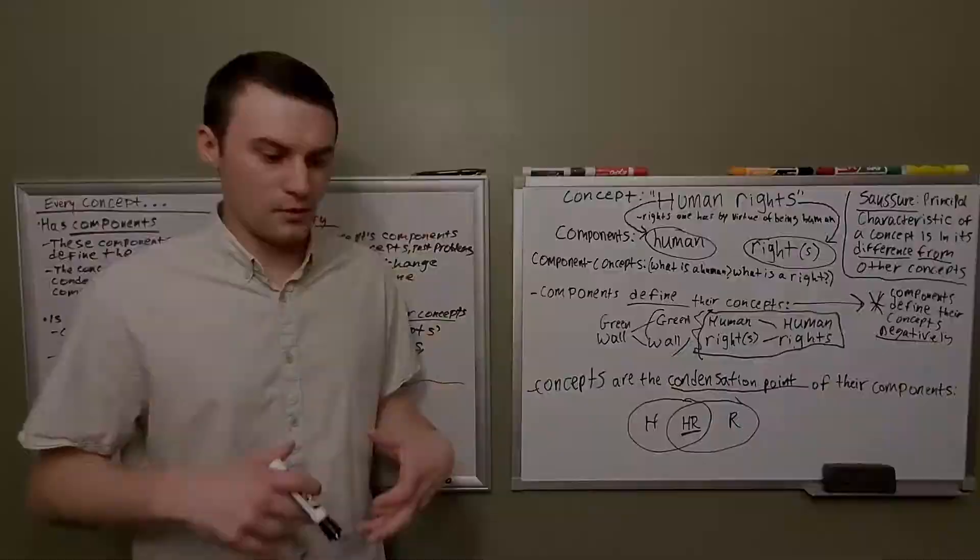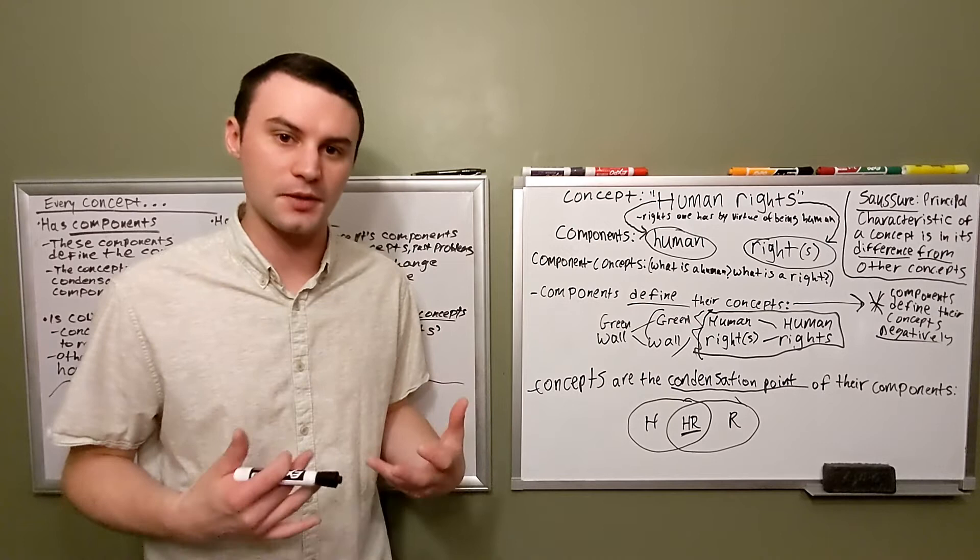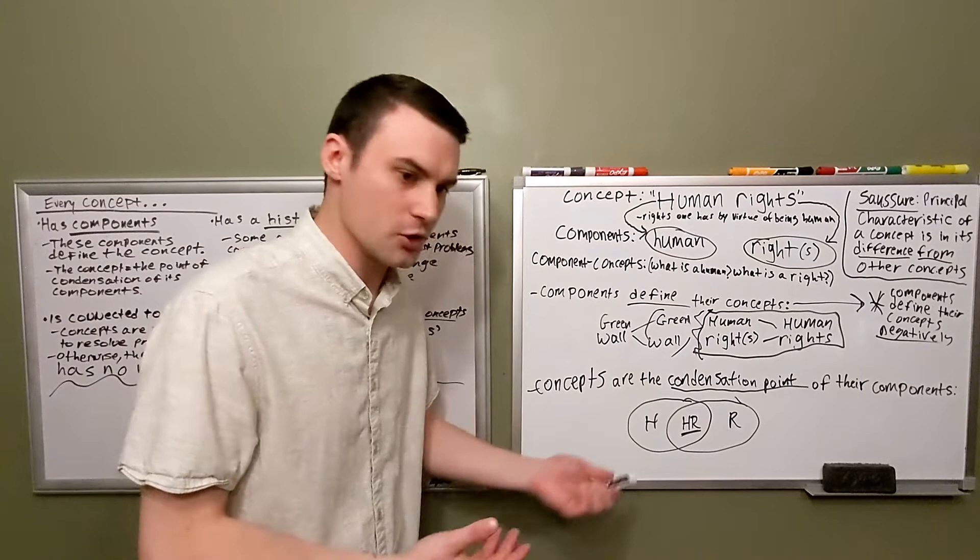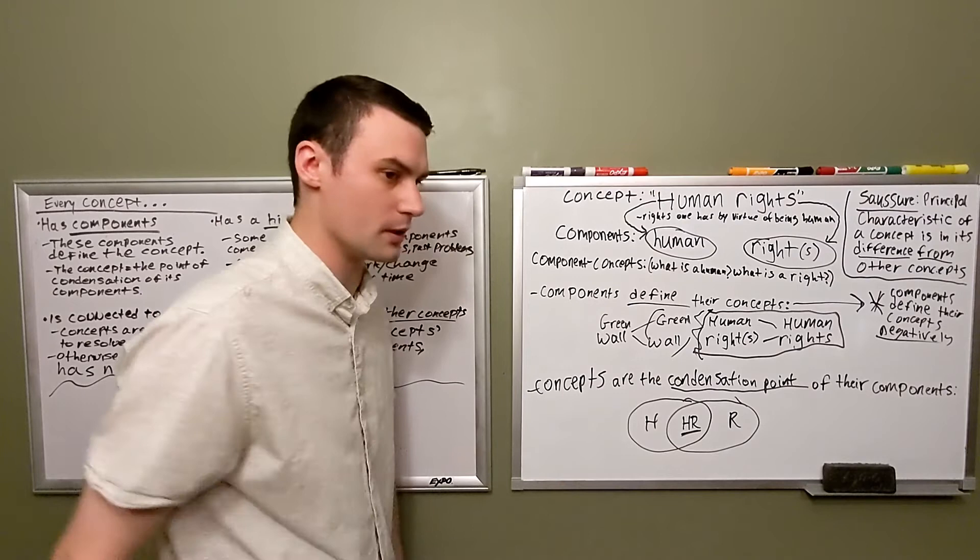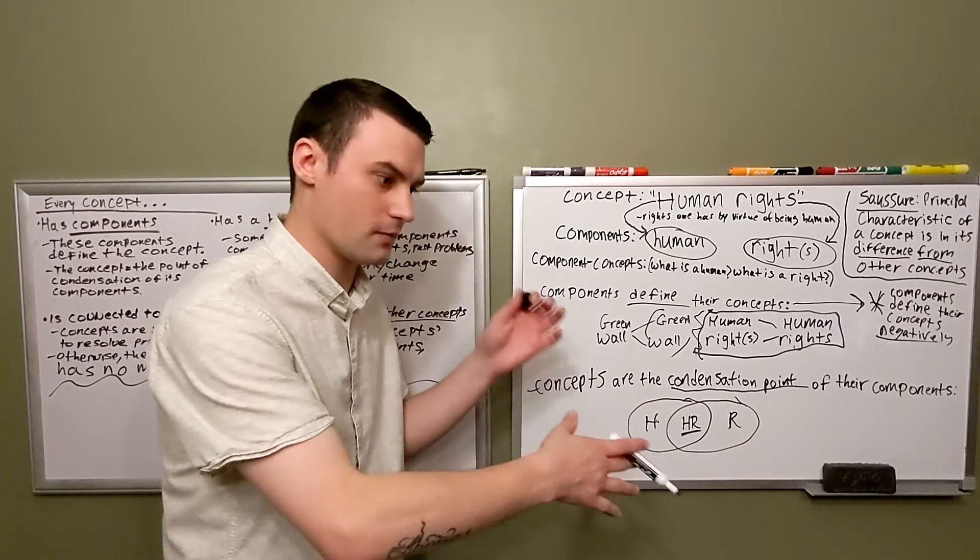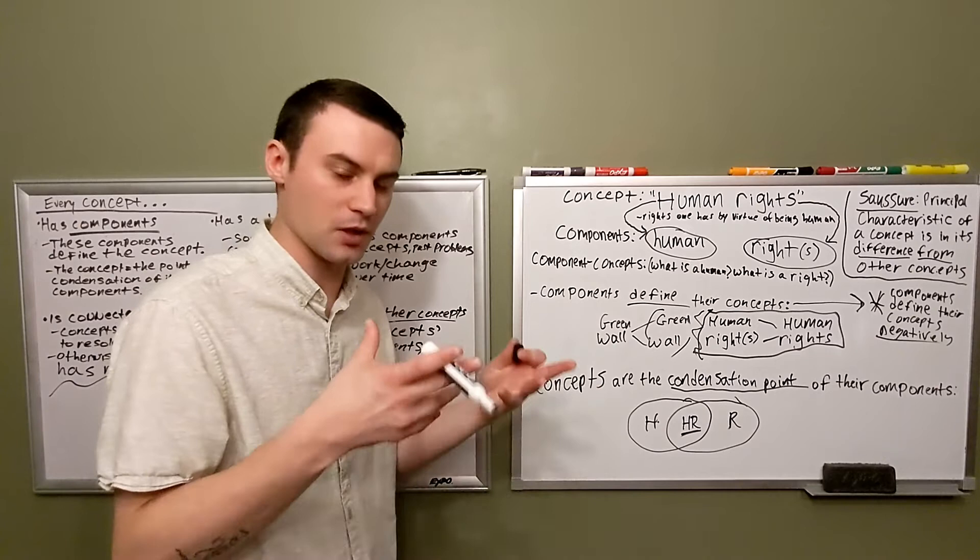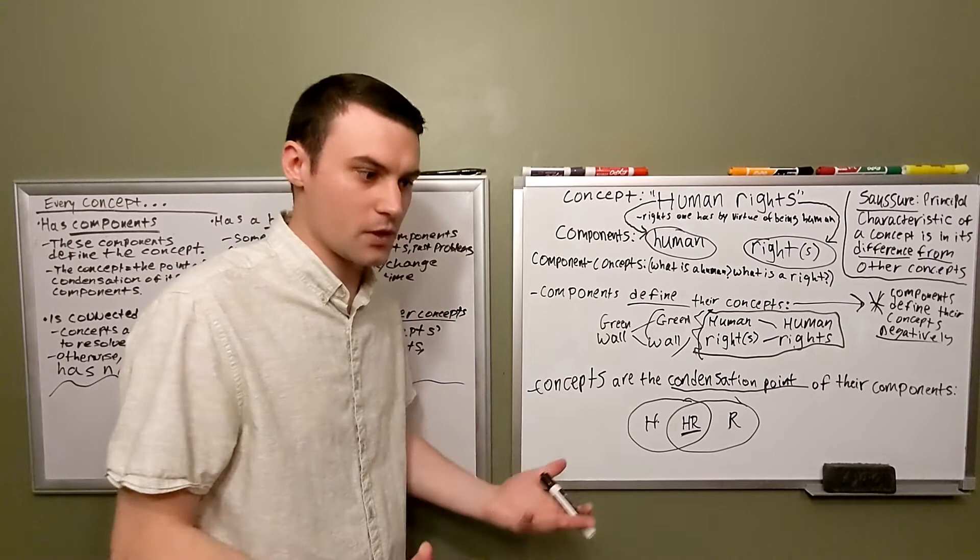Secondly, Deleuze and Guattari tell us that concepts are the condensation point of their components. I thought a Venn diagram was the most helpful way to represent this idea. So H and R stand for human and right, the concept of human and the concept of right. The concept of a human right is going to necessarily contain elements of the concept of human and it's going to contain elements of the concept of right. Just like with our discussion of reproduction with cells, each new cell will have components of the two cells that conceive it. Same with the philosophical concept. It will have components from each of the other concepts that make it up.